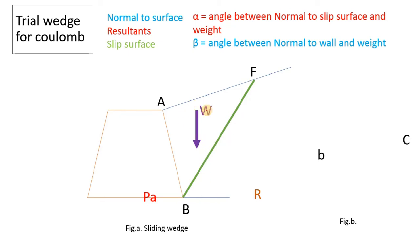This is the weight of the wedge ABF. Draw two lines parallel to the weight. Now alpha and beta are the angles. Beta is the angle made with the horizontal by the wall. Alpha is the angle made by the failure plane with the horizontal.